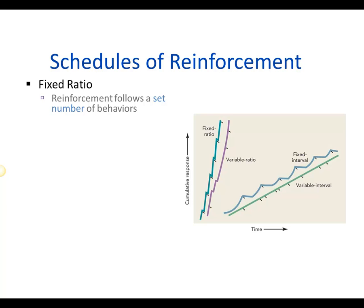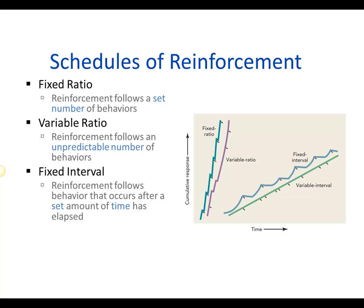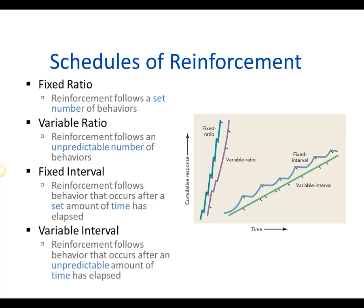We have different schedules of reinforcement — different ways of looking at the frequency of reinforcement — based on either time or behavior. Fixed ratio: reinforcement follows a set number of behaviors; for every five quiz attempts, you get ten points. Variable ratio: reinforcement follows an unpredictable number of behaviors; you receive reinforcement somewhere between five and fifteen quiz attempts. Fixed interval: reinforcement follows a behavior after a set amount of time has elapsed, such as every five minutes. Variable interval: reinforcement follows a behavior after an unpredictable amount of time has elapsed.